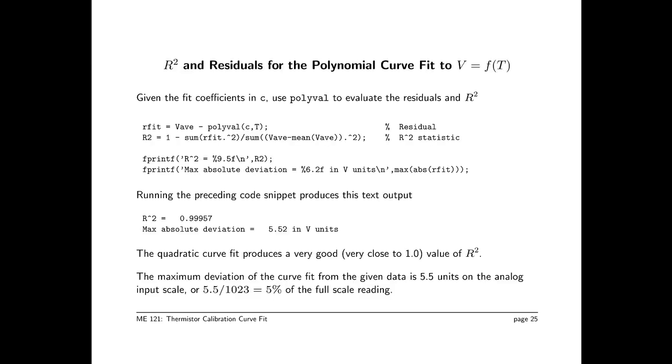There's a busy slide with some MATLAB code that evaluates the residuals and then the r squared statistic, r fit in this case. Now, remember, v av is the output. So we're fitting v as a function of t. So v av is the output of the voltage divider. Polyval c, t is the curve fit evaluated at the input temperatures. And r squared is this formula on the following line. And when we print it out, we get r squared at 0.99957, which is really quite good. And the maximum absolute deviation, which is the maximum residual, is 5.5 in the units of v. In this case, since v ranges from 0 to 1023, we could say that the maximum deviation is about 5% of the full-scale reading.